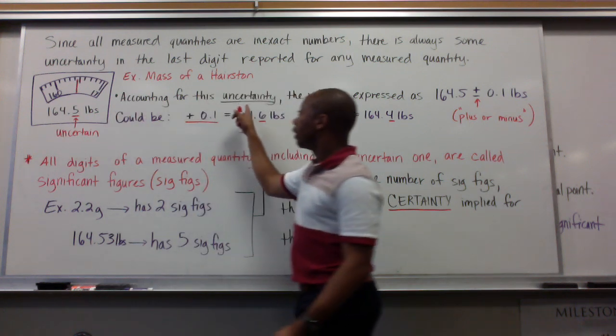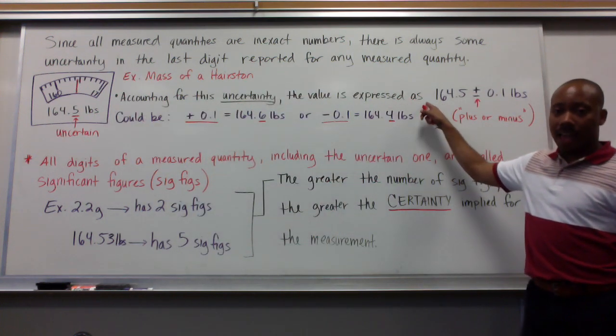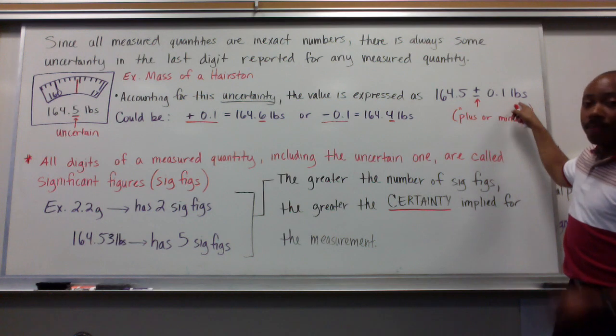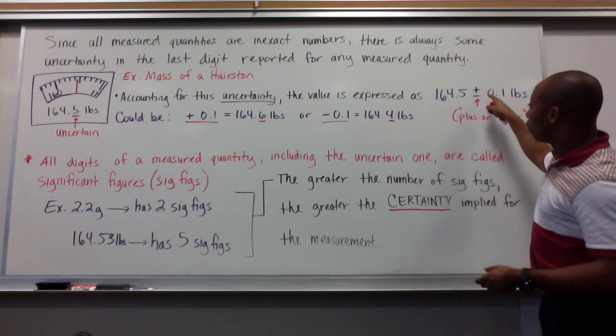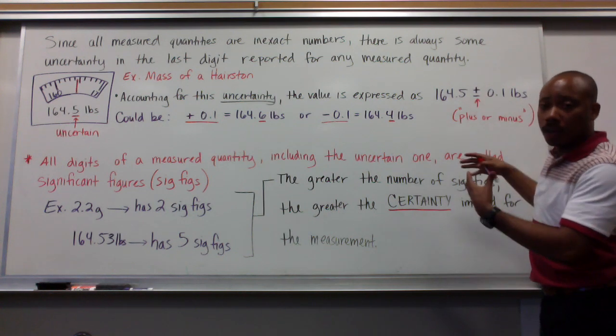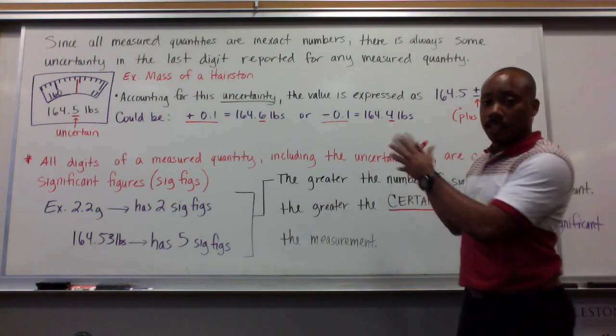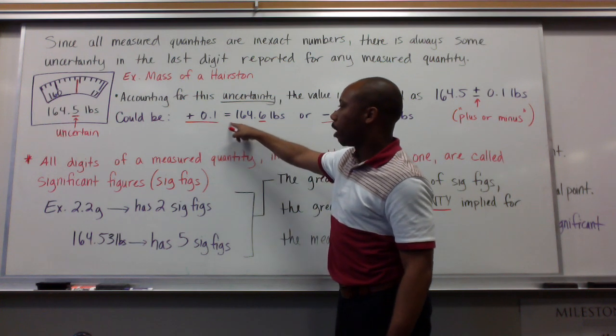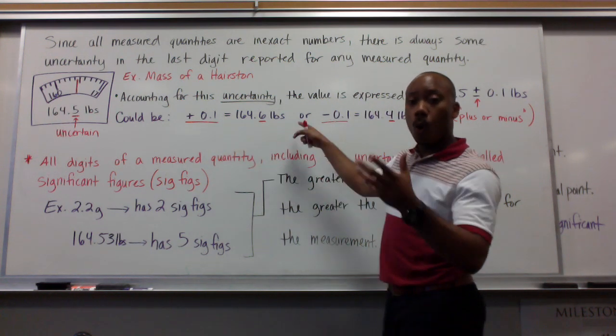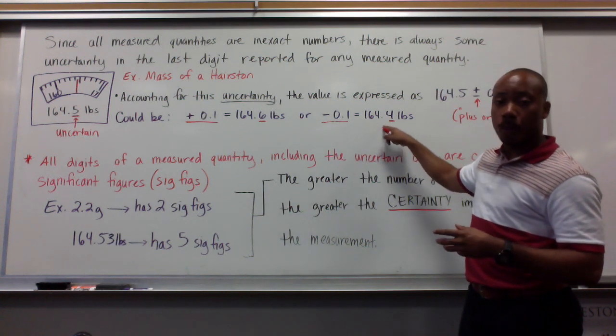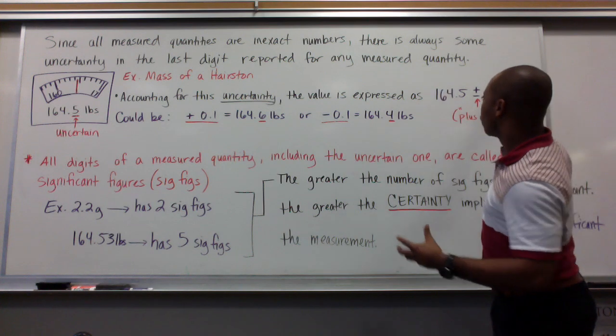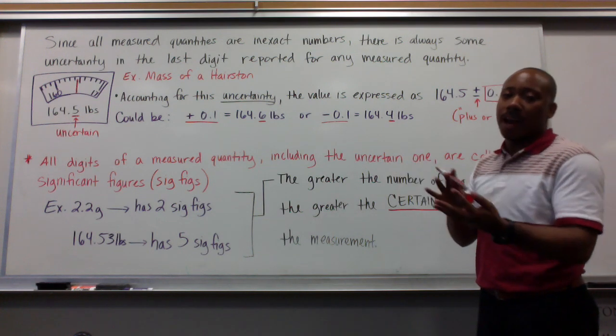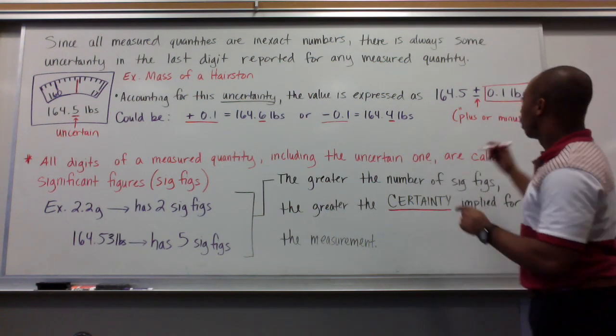And when we account for that uncertainty, the value is expressed as 164.5 plus or minus 0.1 pounds. That means that this number could possibly be 0.1 pounds higher or 0.1 pounds lower. So, we could read it as plus 0.1, which would make this number 164.6 pounds, or we can read it minus 0.1, which would make it 164.4 pounds. That's what this number means. This is just some degree of uncertainty that we have - it's either plus 0.1 or minus 0.1. That's because we approximated to the 10th place.